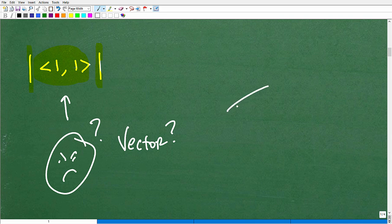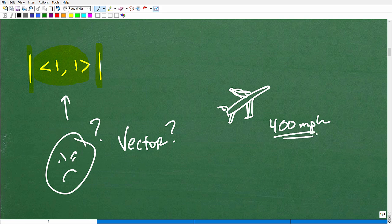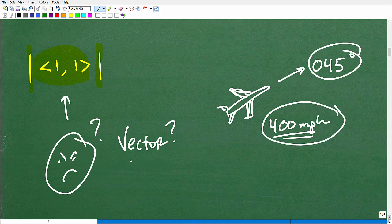Well, a vector is something that represents both magnitude and direction. So, for example, let's say here's my lovely little airplane. Okay, I'm flying my airplane. That's a terrible wink. All right, man, it's a little bit better. So here's my airplane, and it's going, let's say, 400 miles per hour. Okay, so this is just magnitude. But vectors represent both magnitude and direction. So let's say this airplane is going 400 miles per hour on a course of 045 degrees. Okay, so when you have both magnitude and direction, you have what we call a vector, right?